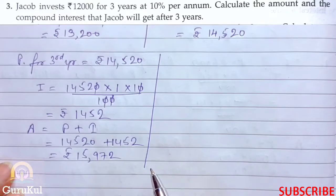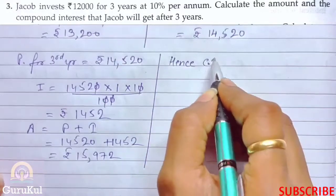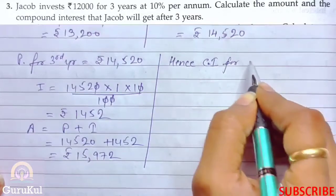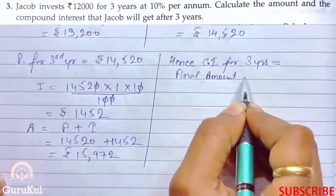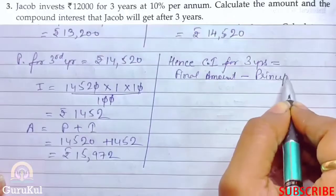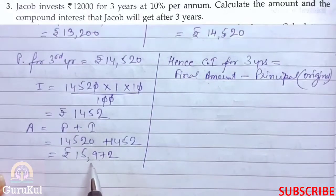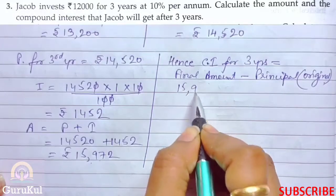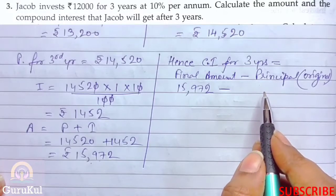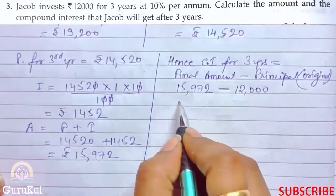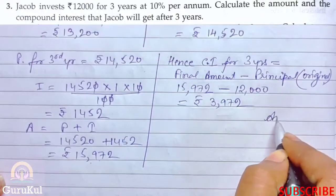Next we have to find the compound interest for the third year. Hence, compound interest for three years equals final amount minus the original principle. Final amount we got was ₹15,972 minus original principal, which was ₹12,000 that Jacob invested. That gives us the amount of ₹3,972. So this is the answer.